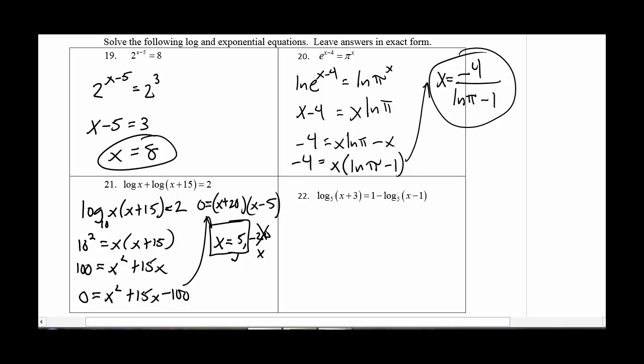Number 22, I've got a minus. So what I want to do is bring it over to the other side. So log base 5 of x plus 3 plus log base 5 of x minus 1 equals 1. So now that I've got them on the same side, I'm going to apply the same trick that I worked on for 21, or I'm going to bring them together as a product. So log base 5 of x plus 3 times x minus 1 equals 1.